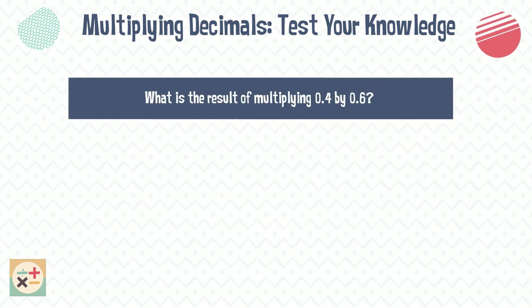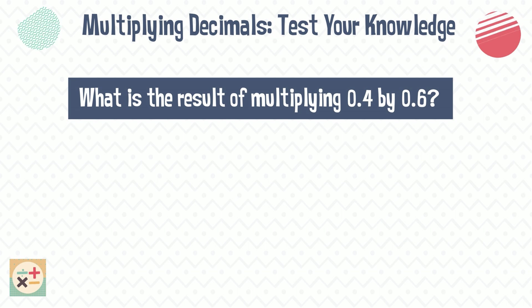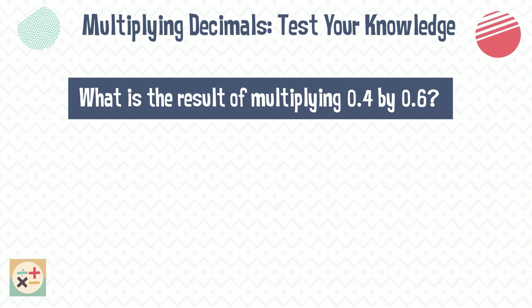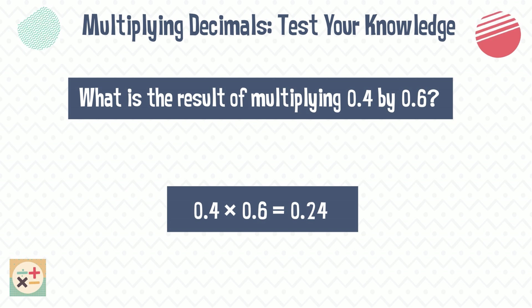Question three: what is the result of multiplying 0.4 by 0.6? The result is 0.24.